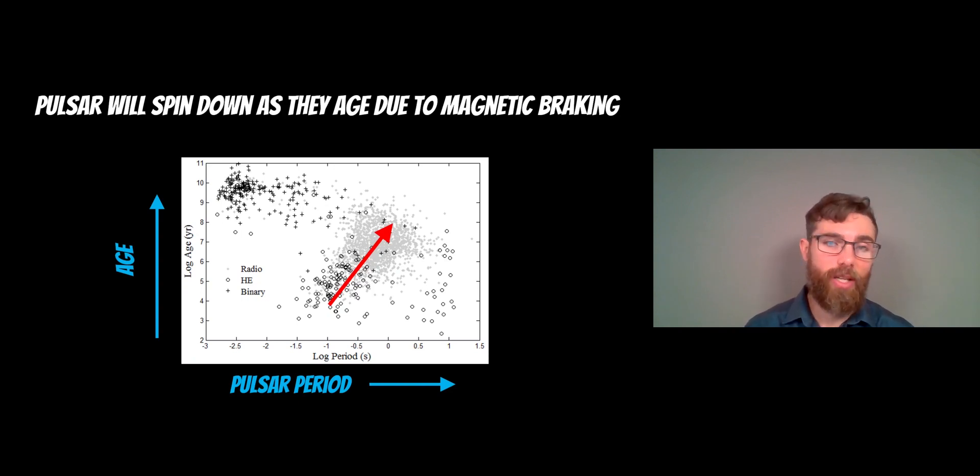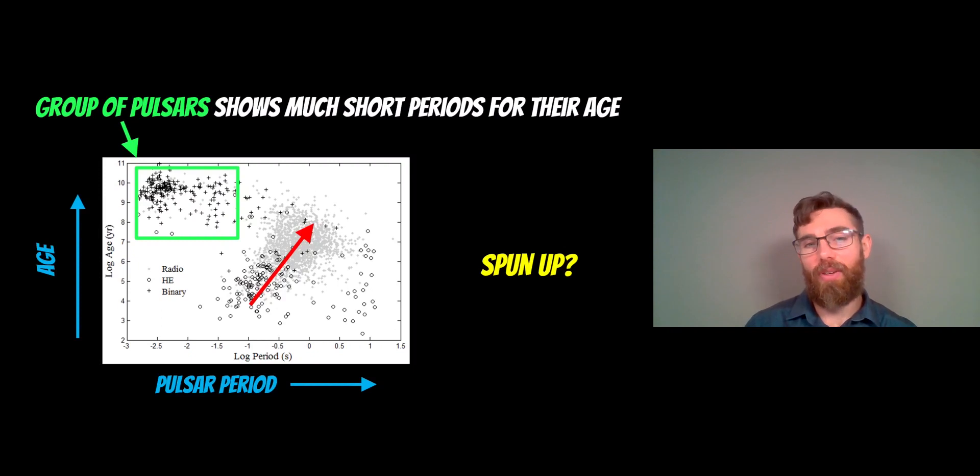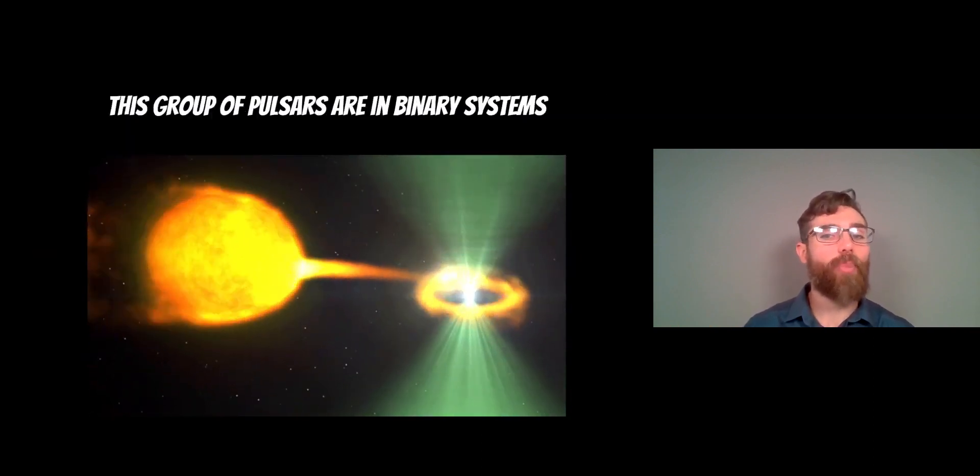However, there's a very obvious group here on this plot which have very short periods but are also very old. So they haven't spun down, or they don't appear to have been spun down—or could they have been spun up? The interesting thing about this particular group is that they are in binary systems.